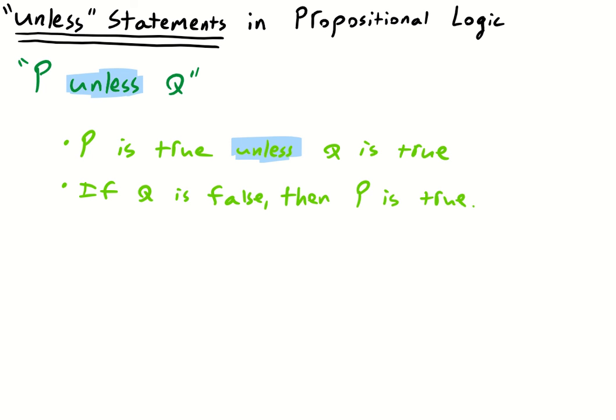And so we have reached what this means. And we know how to translate it now. So P unless Q means if not Q, then P. Where this unless statement basically means if not. And so, what follows the unless just becomes a negated antecedent in a conditional.